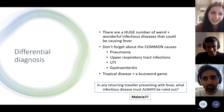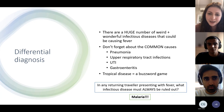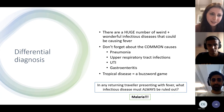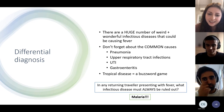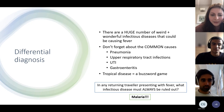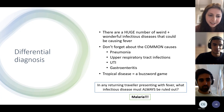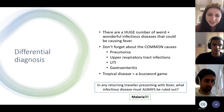Coming up with a differential in ID can feel overwhelming, but UCL OSCEs will focus on common things — pneumonias, upper respiratory tract infections, UTIs, gastroenteritis. The weird tropical diseases are more for SBAs, and it really is just a buzzword game. One key rule: in any returning traveller presenting with fever, you must always rule out malaria.